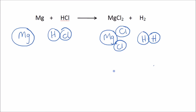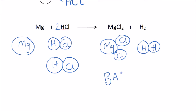But what if we had two molecules of hydrochloric acid? Then when we count up the number of each element on the left-hand side and the right-hand side, we find that we have one magnesium here and one magnesium here, two hydrogens on the left and two on the right, and two chlorines on the left and two on the right. So this equation is now balanced.